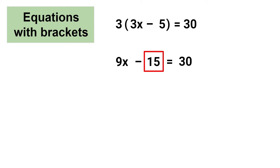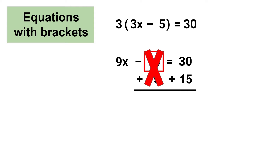The constant 15 is being subtracted in this equation, so to remove it we have to do the opposite operation, which is addition. Whatever you do on one side of the equal sign you need to do the same on the other side to keep it equal. So to remove 15 from the left side I'm going to add 15 to the left side, and negative 15 plus 15 equals 0, which completely removes 15. Since I've added 15 to the left side I also need to add 15 to the right side, and 30 plus 15 equals 45.